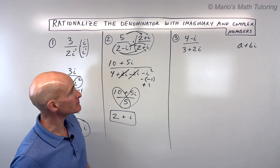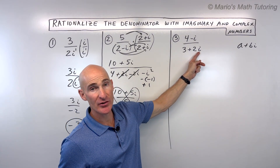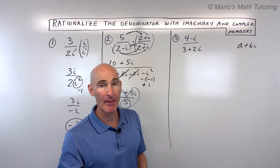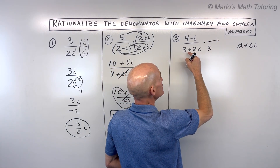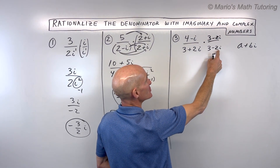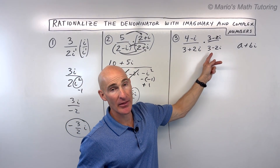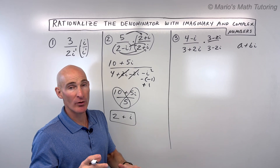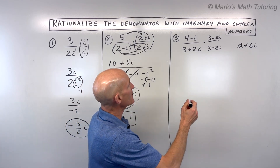Let's look at example number three. Same idea — we don't want the i in the denominator, so because it's a binomial we're going to multiply by the complex conjugate. We just take the same two quantities but change the sign in between. Sometimes students make a mistake and flip the signs on everything — you don't want to do that. You just want to change the sign in between, because the inner and outer terms are going to cancel, which eliminates the i. That's what we're trying to do.